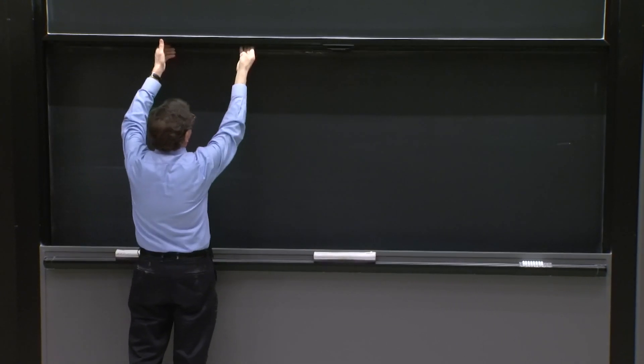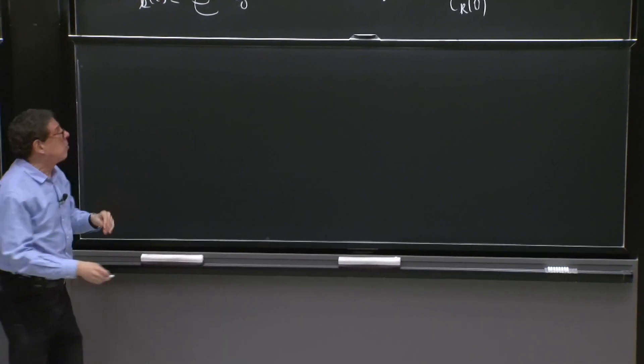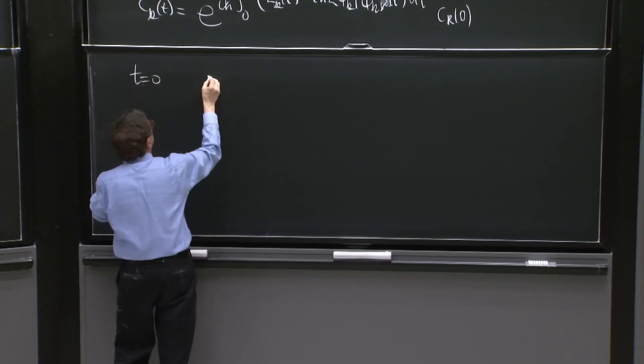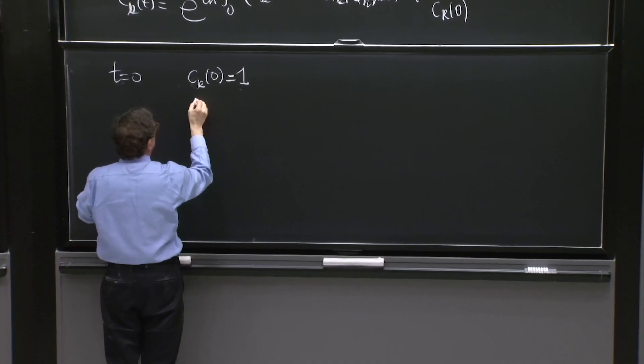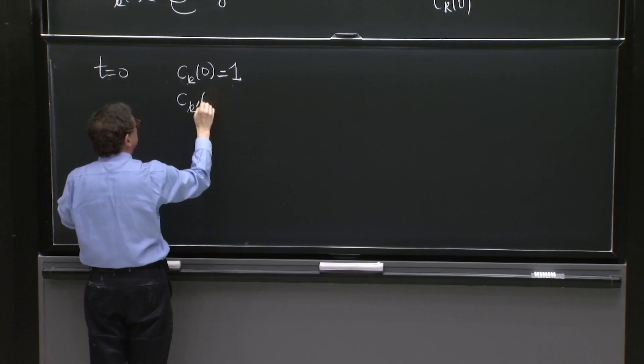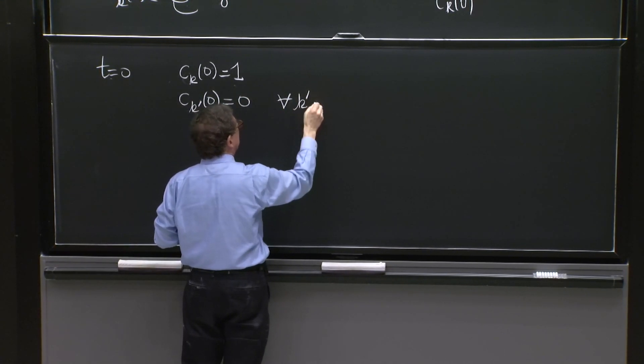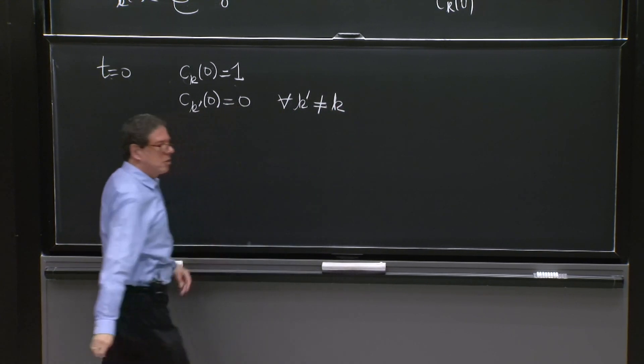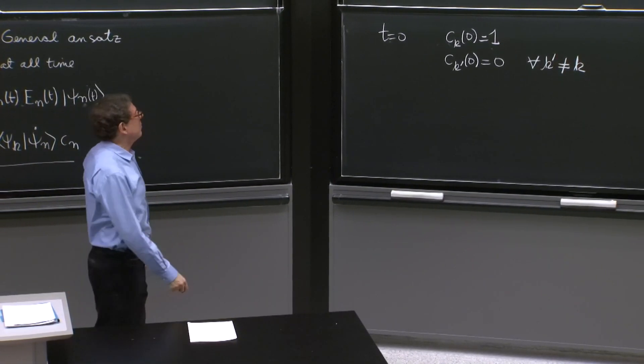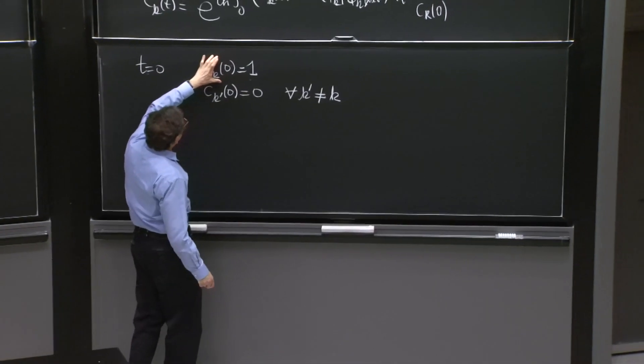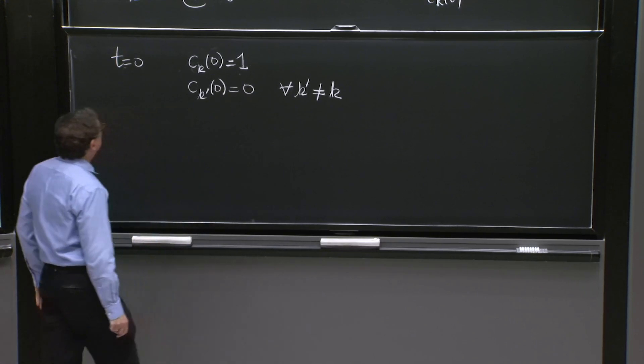In particular, if you have that at time equals 0, some c k of 0 is equal to 1, but all the other ones, c k primes at 0, are equal to 0 for all k prime different from k. So your initial condition is you are in the state k at time equals 0. That's why you have c k at time equals 0 equal 1, and the others are 0 at different times.